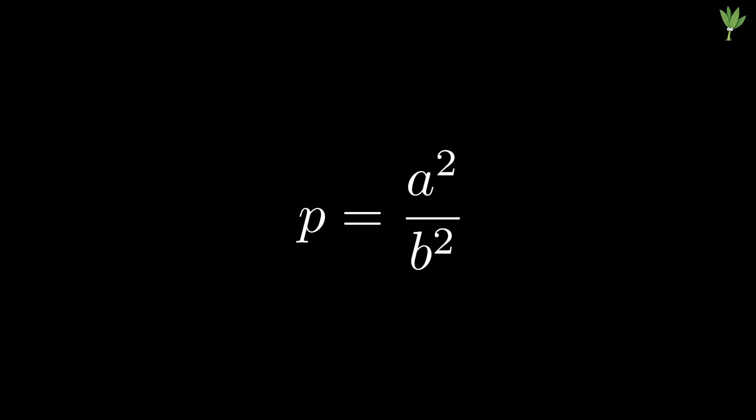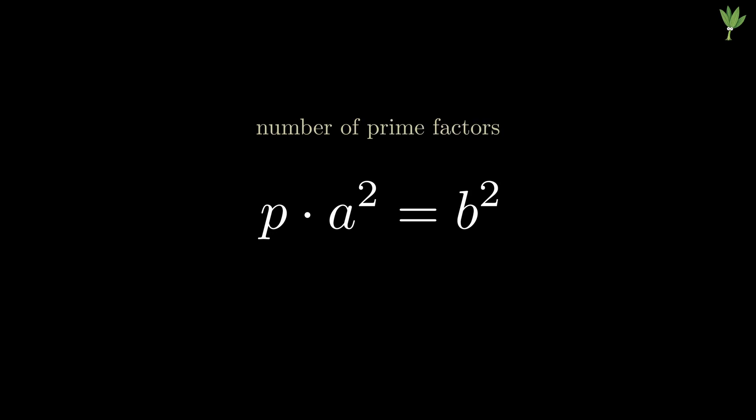Let's rearrange the equation and count the number of prime factors on both sides. We already know that a squared and b squared have an even number of prime factors, and p is a prime, so it has one prime factor. That means that p times a squared has an odd number of prime factors.